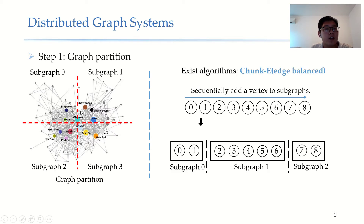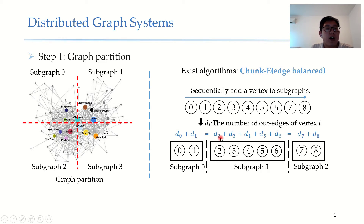The first one is the chunk-based algorithm. It sequentially adds adjacent vertex IDs and their corresponding edges to the same subgraph until it reaches the balanced indicator. For chunkE, the balanced indicator is to keep each subgraph containing the same number of edges. So we first add vertex 0 and vertex 1 to subgraph 0. After that, we find that subgraph 0 already contains the average number of edges, so we start to add vertex 2 to subgraph 1. This shows that the sum of outer edges of vertices in each subgraph is equal, but the number of vertices in each subgraph may be imbalanced. For example, subgraph 1 has 5 vertices, but subgraph 0 and 2 have only 2 vertices.